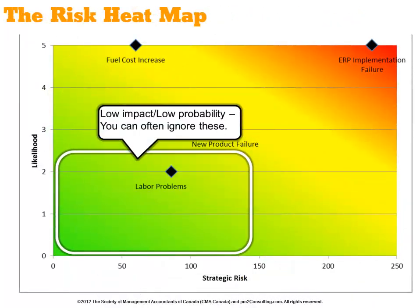Now, to read this: any risk that appears in the bottom left corner, where it has a lower strategic risk and lower likelihood, are risks that in all cases you can probably just ignore for now.